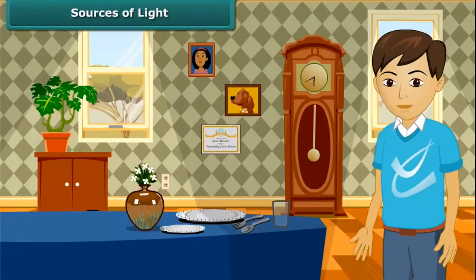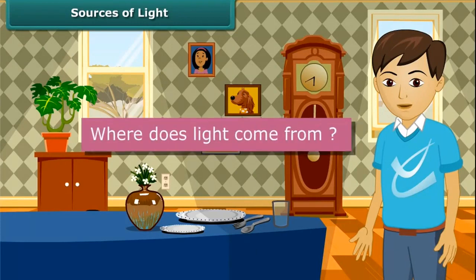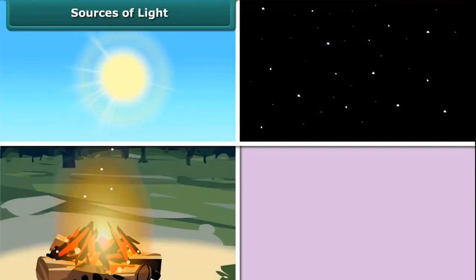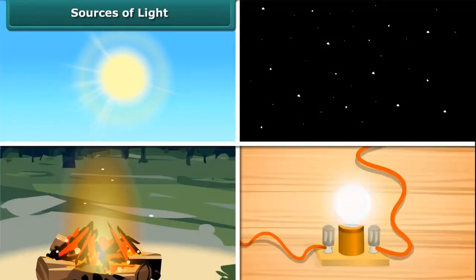Sources of Light. Can you tell where does light come from? Light comes from many sources like sun, stars, fire, candle, an electric light bulb, etc.